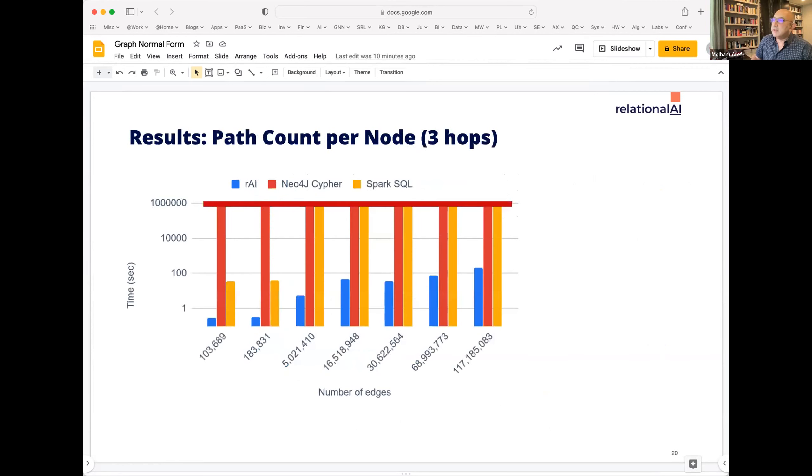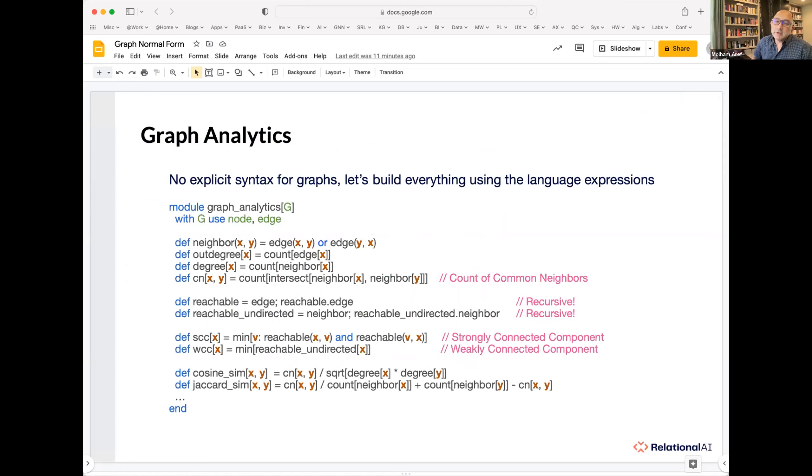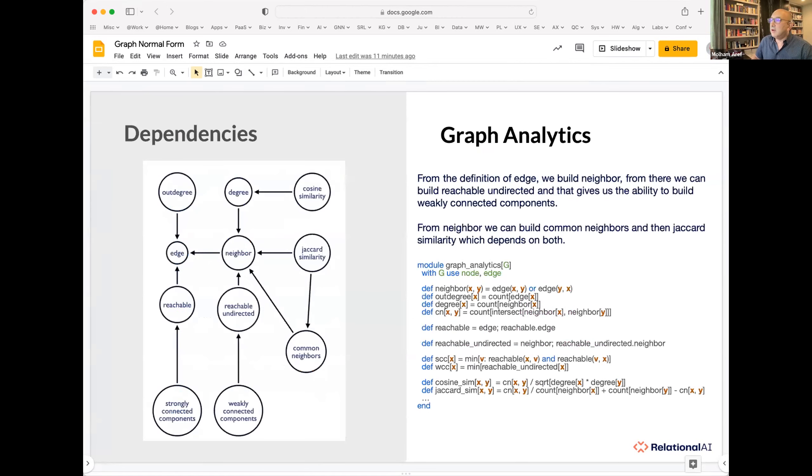And just to give you a glimpse that performance can be good, I don't have time to give you the details of the benchmark, but because of the semantic optimization and the worst case optimal joins that we do here, we can actually do this computation very efficiently. And if you want more sophisticated examples, here's one where we've defined a bunch of graph related queries, like neighborhood and out degree and degree and whether something is reachable or not with transitive closure and the strongly connected components, the weakly connected components, the cosine similarity, the Jaccard similarity, very straightforward representation of what you're trying to do and how you're navigating and defining graph workloads.